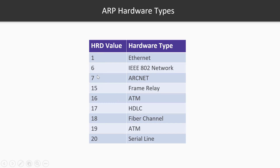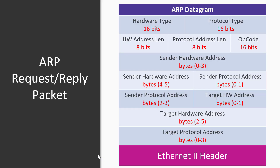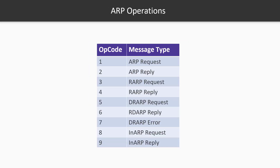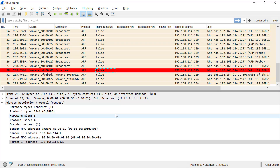We also have the hardware type, which is 1 for Ethernet. The protocol type identifies the network layer protocol. We have the protocol length, which is the length in bytes of the logical address — usually four bytes for an IP address — and the hardware length, which is the length in bytes of the hardware address or MAC address, usually six bytes for Ethernet. The operation code is 1 for an ARP request, 2 for an ARP reply, and so on for the rest of the message types.